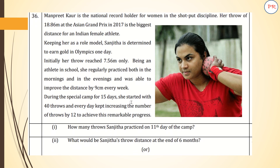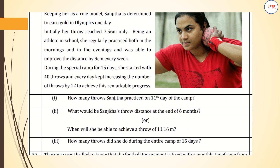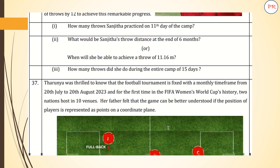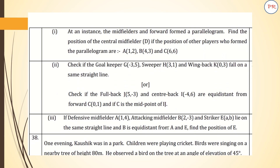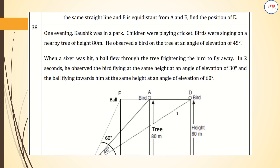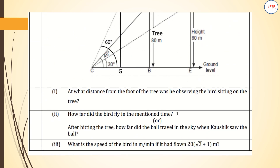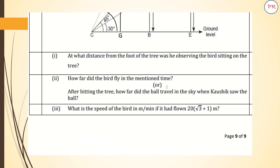Section E, question 35 onwards, is paragraph-based as already discussed. In question 36, a paragraph is given and there are three sub-questions for 1 mark, 2 marks, and 2 marks respectively. Question 37 is also paragraph-based with three sub-questions including 1 mark and 2 marks, with an OR for the 2-mark part. Question 38 is also paragraph-based, with an OR option in the 2-mark sub-part. That's all about the question paper.